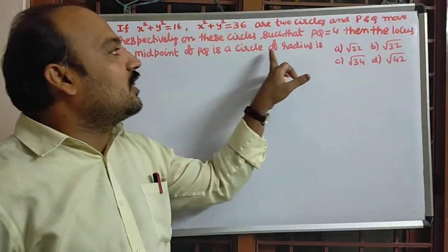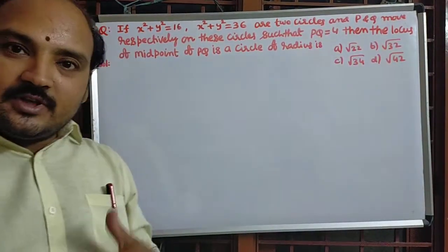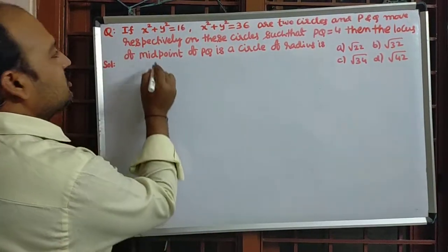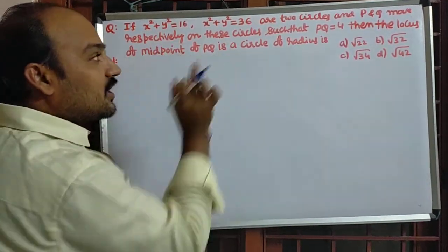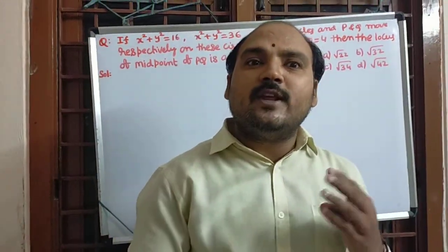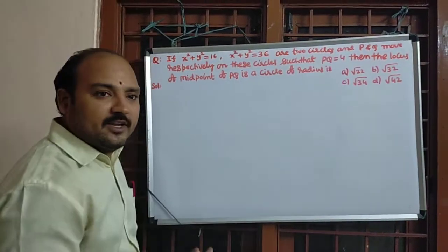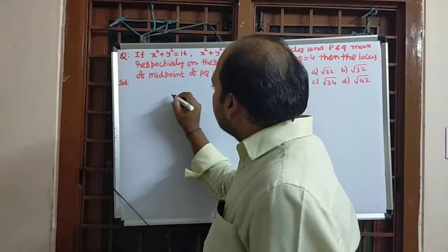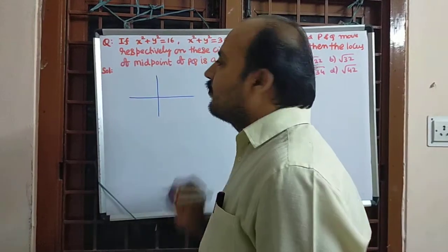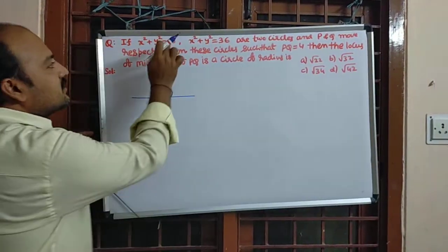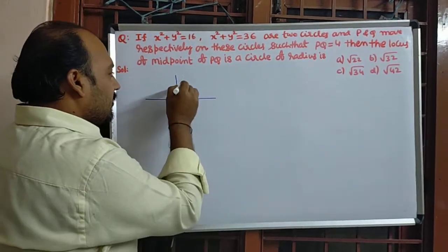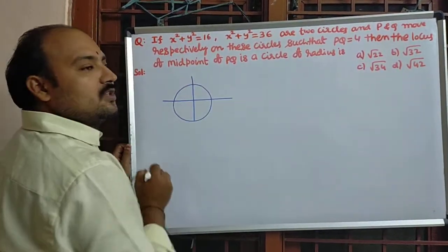That means we need to calculate the required circle radius. So draw the diagrams of these two. If you observe, both the circles are standard equation of circle, whose center is 0 with different radius. So you have to draw both circles. One circle is with radius 4, another circle radius is 6. This is the first circle.